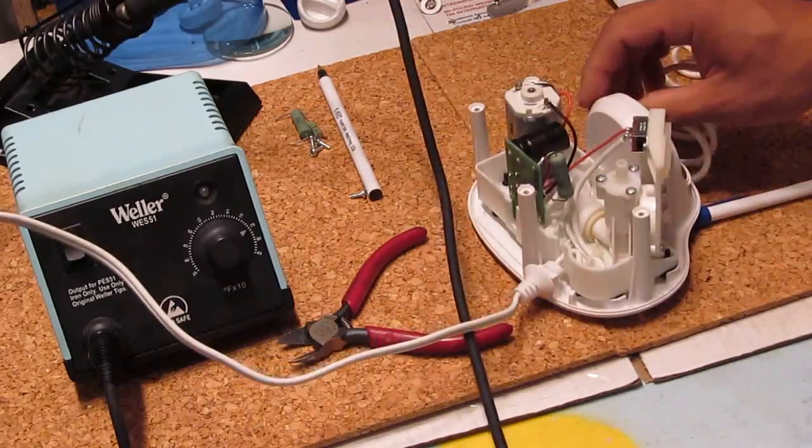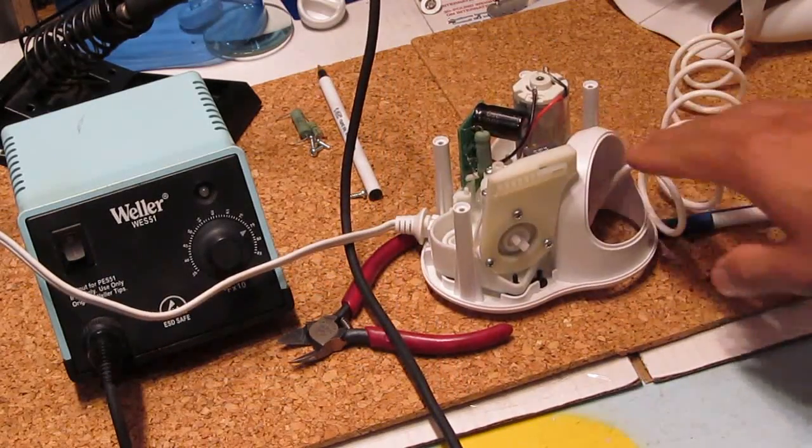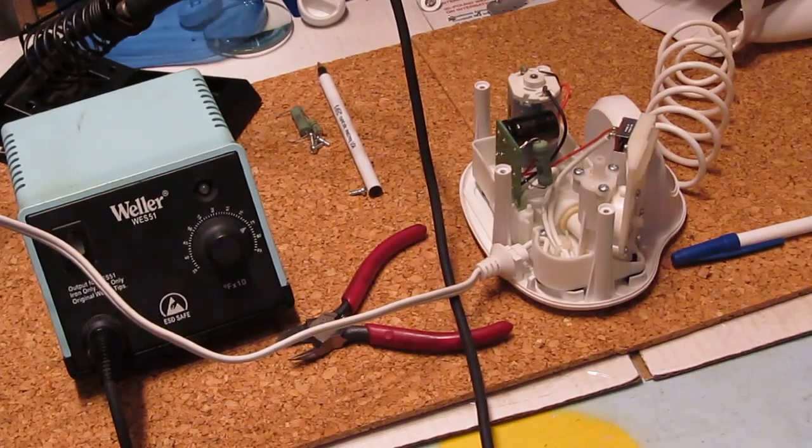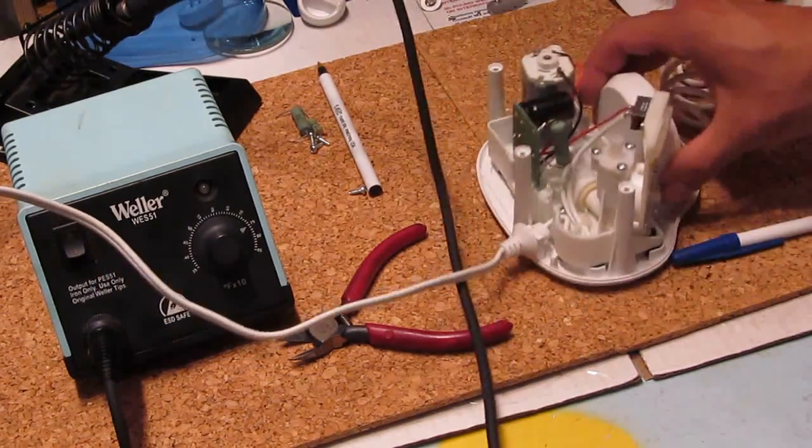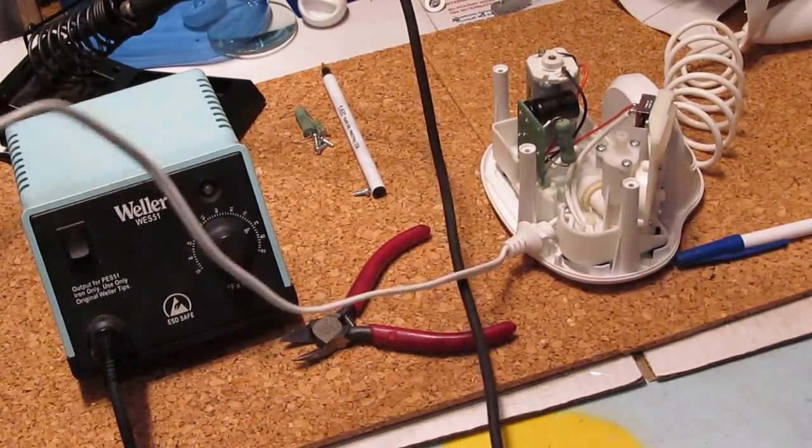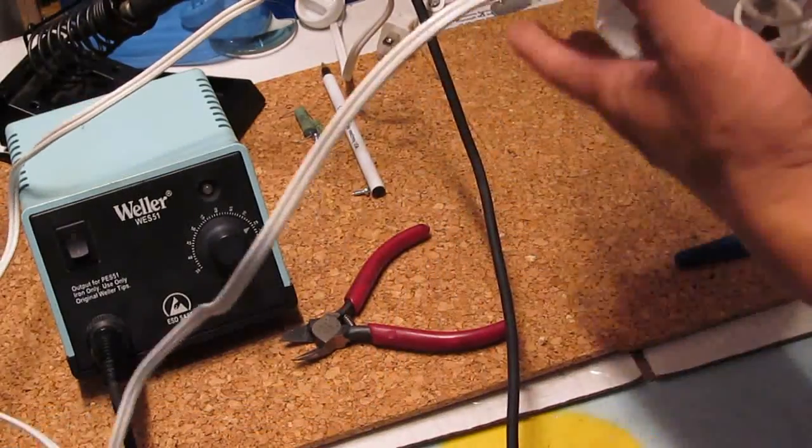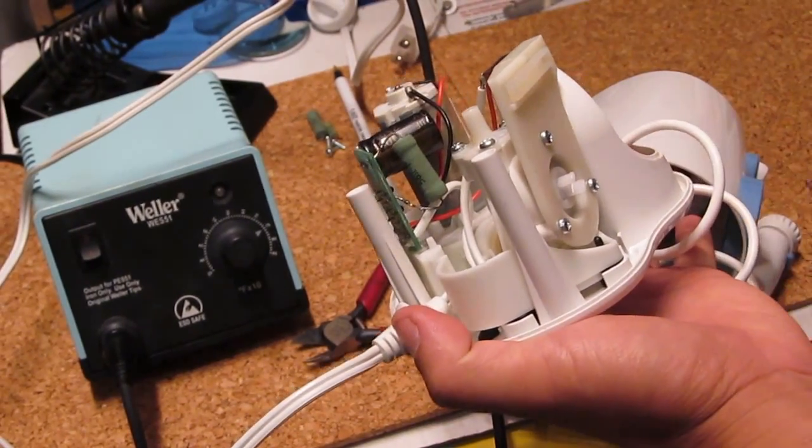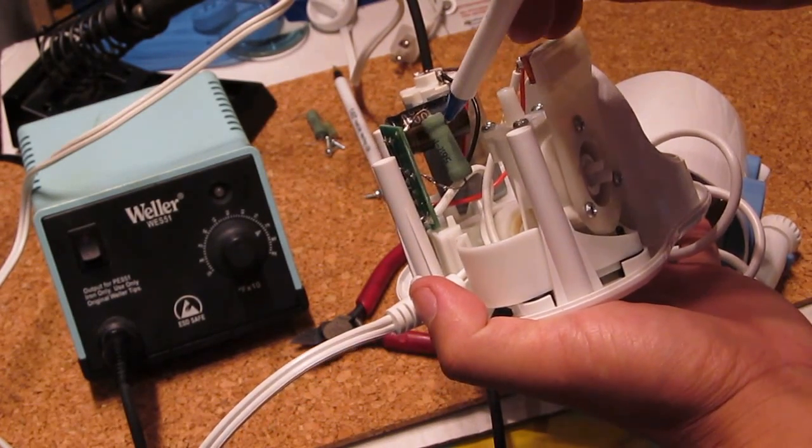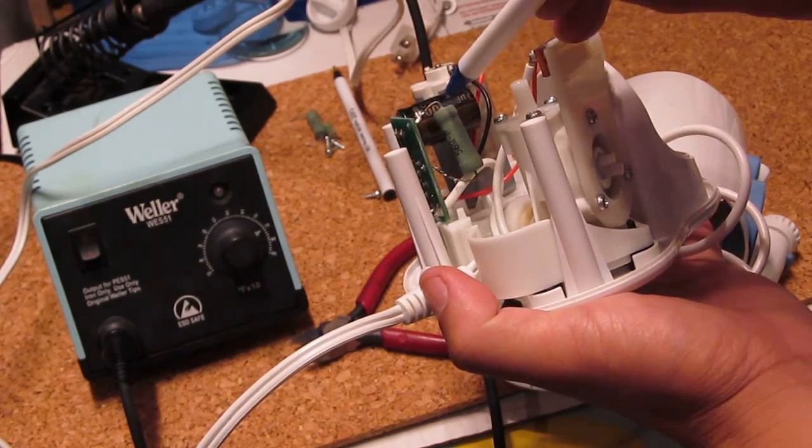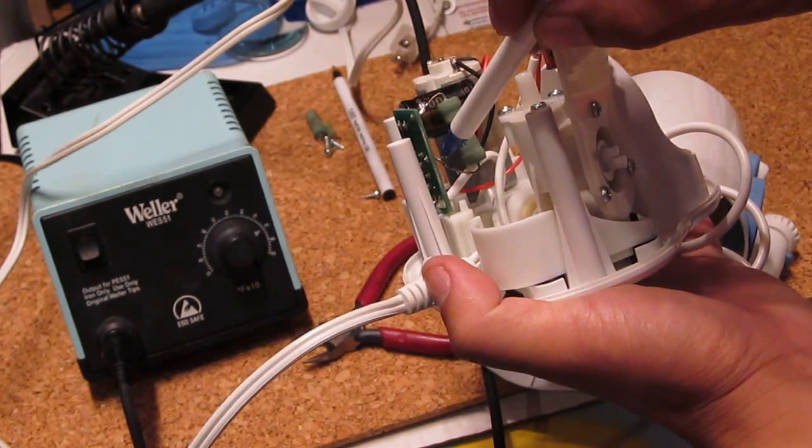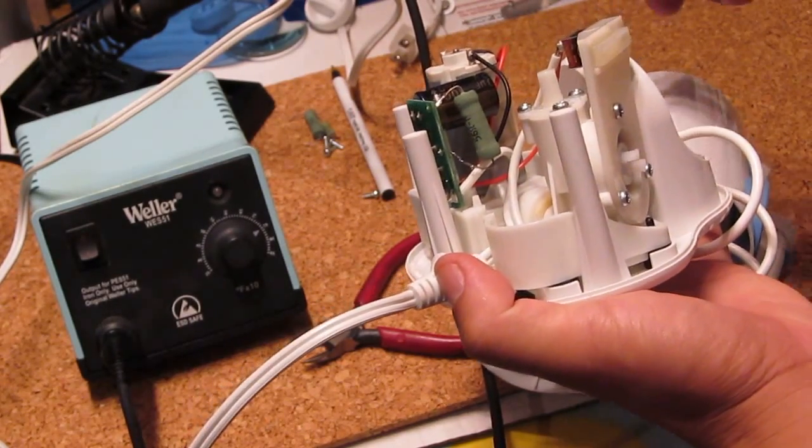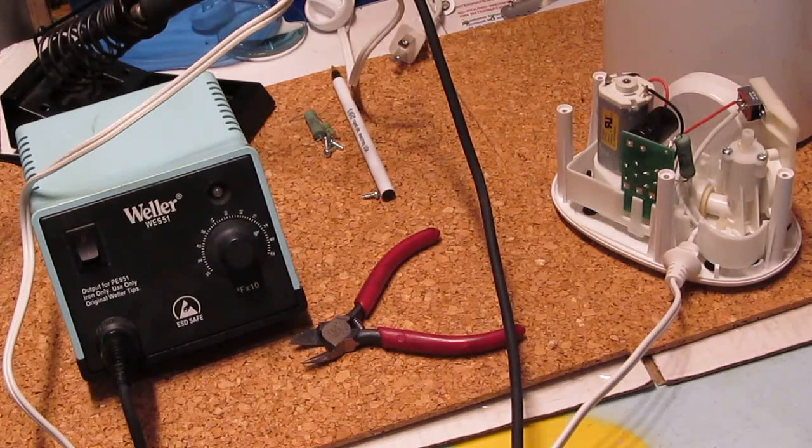All right folks, this is the Waterpik water flosser and this is how I fixed it with just one resistor. That's all I have. Thank you for watching. I didn't show you when I soldered the new resistor in. Let me show you how it looks. Just a new resistor here. It's way too big, so I had to bend the leg so it can fit in here when I soldered it. But it's in quite good. All right folks, thank you for watching.